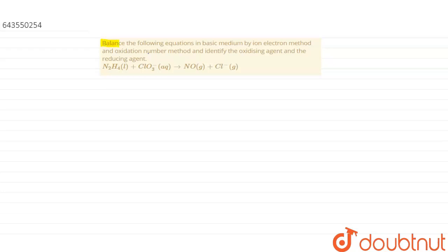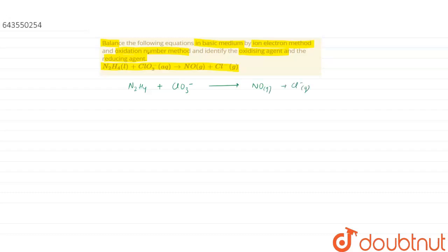Hello everyone. The question is: balance the following equation in basic medium by the ion electron method and oxidation number method, and we have to identify the oxidizing agent and the reducing agent in the given equation. The equation is: N2H4 + ClO3⁻ → NO(g) + Cl⁻(aq).